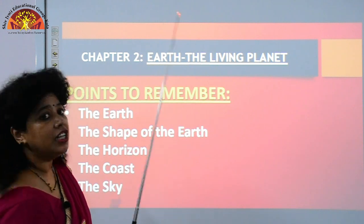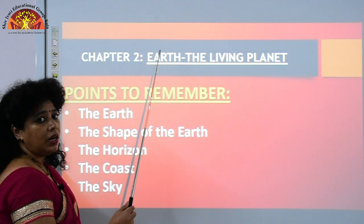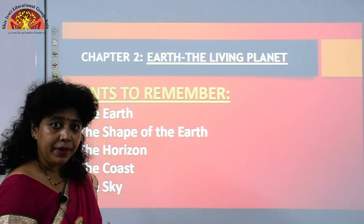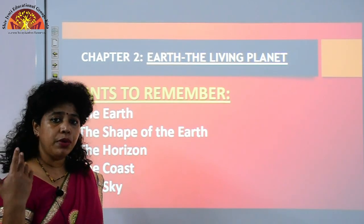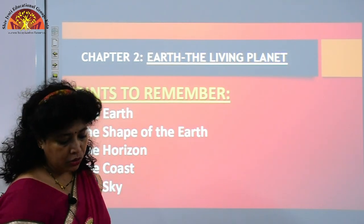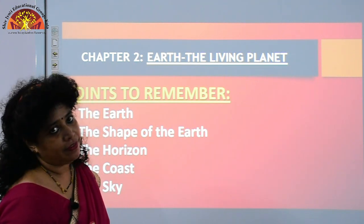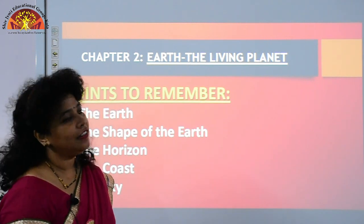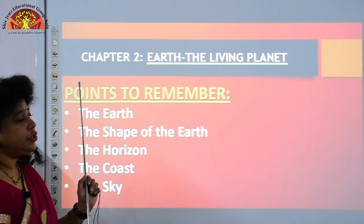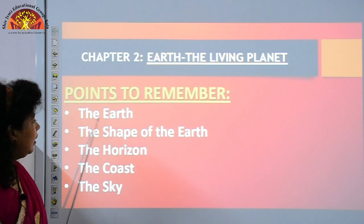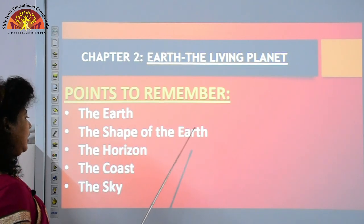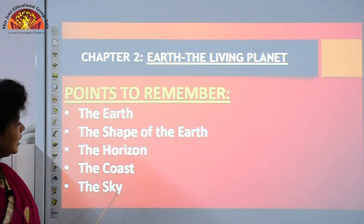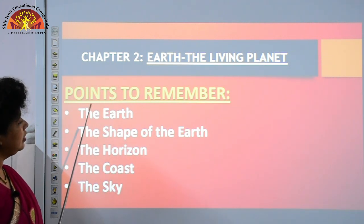Now we shall proceed with the revision of Chapter 2 - Earth the Living Planet. Before I start, I want you to open your textbook to page number 7 and let us start the revision. The points to remember are: the Earth, the shape of the Earth, the horizon, the coast, and the sky.